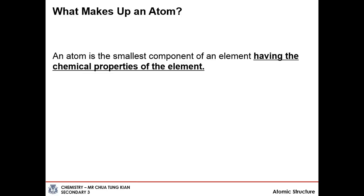Before we start to decipher the atom, we must first know what is an atom. By definition, an atom is the smallest component of the element which still has the chemical properties of the element. An atom can be made up of smaller sub-atomic particles, but each sub-atomic particle does not have the chemical properties of that element itself. So if I were to split a carbon atom into its sub-atomic particles, the different particles will not exhibit the same chemical properties as carbon. The atom is the smallest component having the chemical properties of the element.